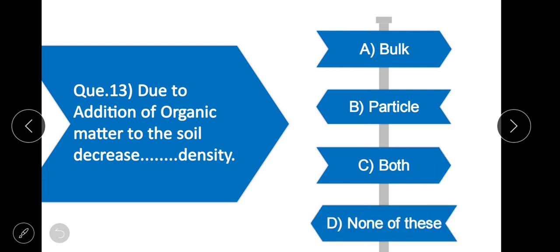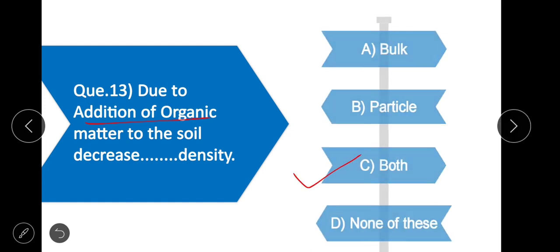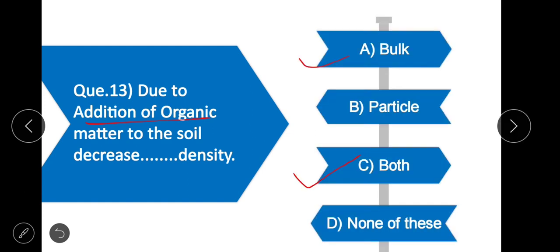Question 13: Due to addition of organic matter to the soil, which density decreases? The correct option is C — due to addition of organic matter, both bulk density and particle density of soil decrease.